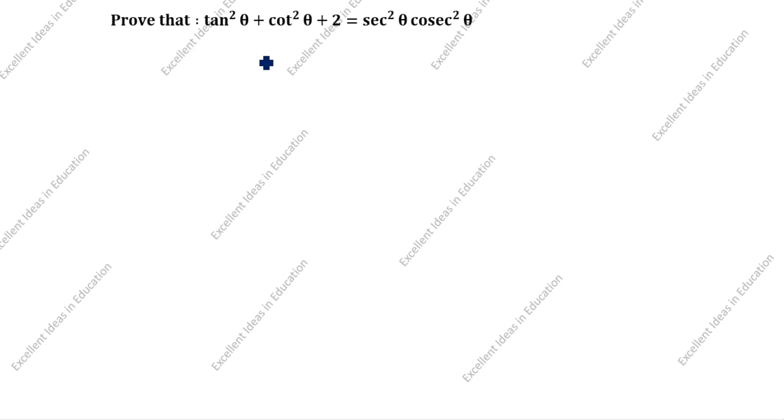Hi friends, welcome to my channel, Excellent Ideas in Education. Today we are going to solve this trigonometry identity problem. Proof that tan squared theta plus cot squared theta plus 2 is equal to secant squared theta cosecant squared theta.